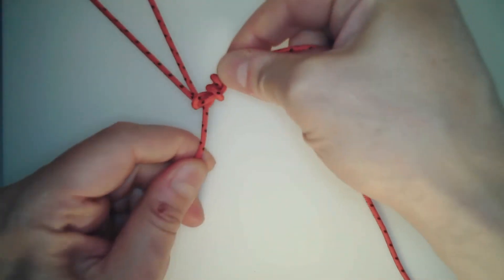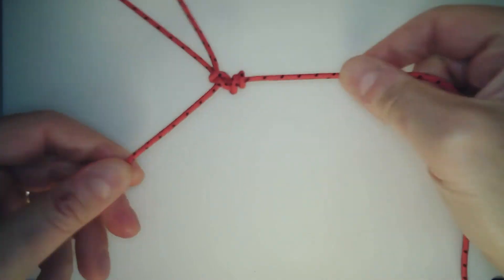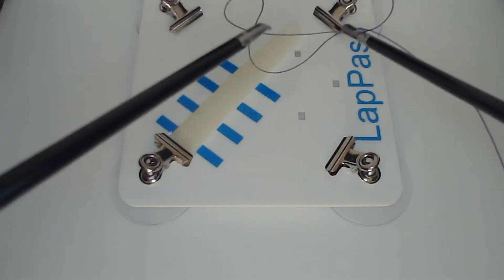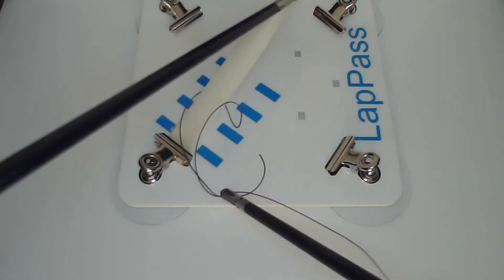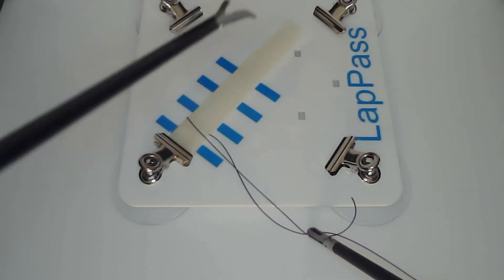The knot can then be slid along and locked at any point. For task two, you have eight minutes to form three of these knots.